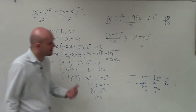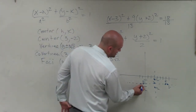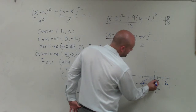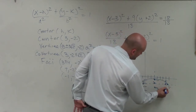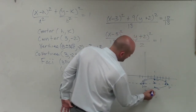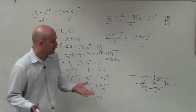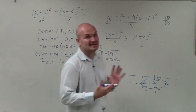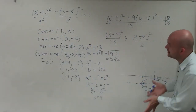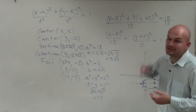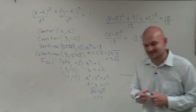Now to graph the ellipse, I draw the curve going through the vertex, through the co-vertex, through the other vertex, back through the other co-vertex, and back up. And there you go — that is how you identify the center and graph an ellipse by putting it into standard form. Thanks.